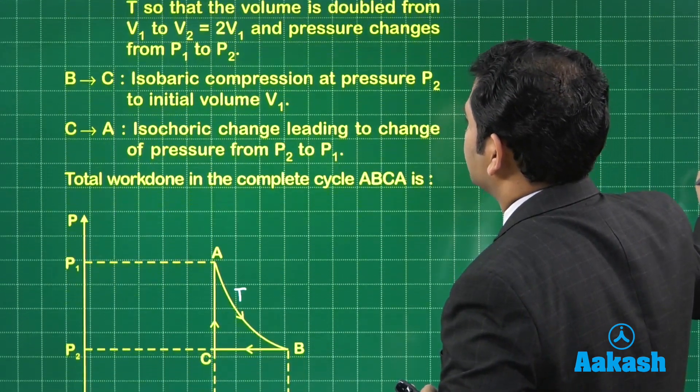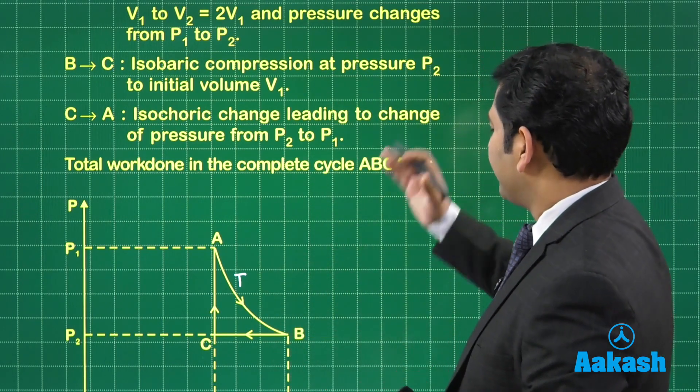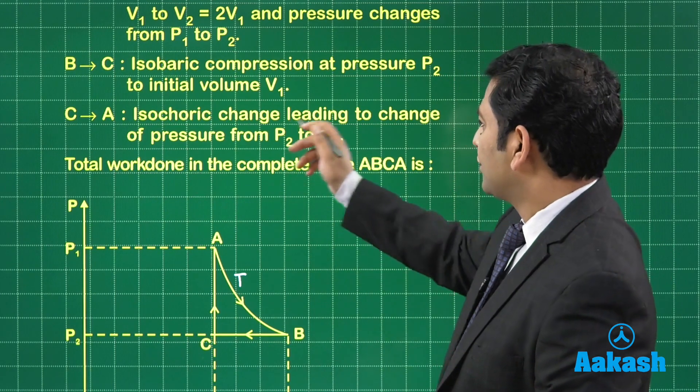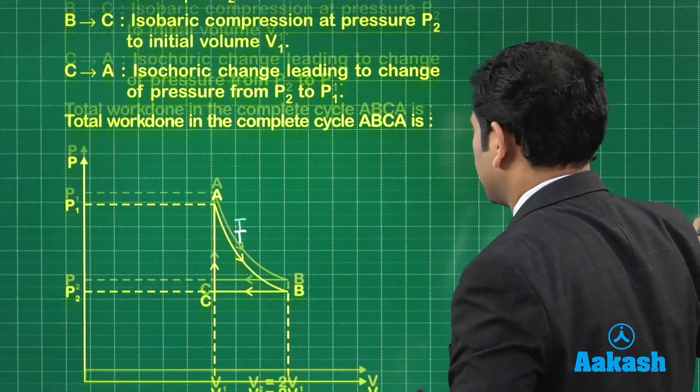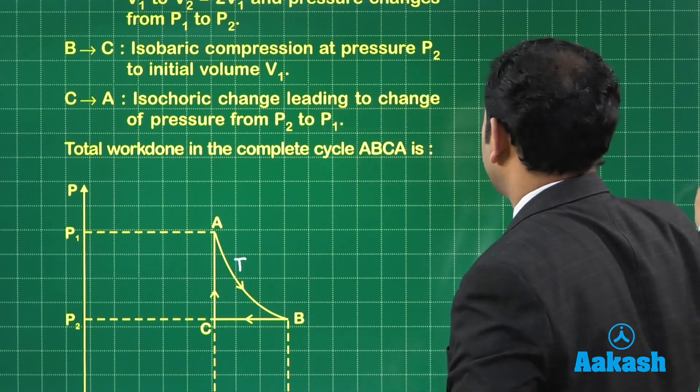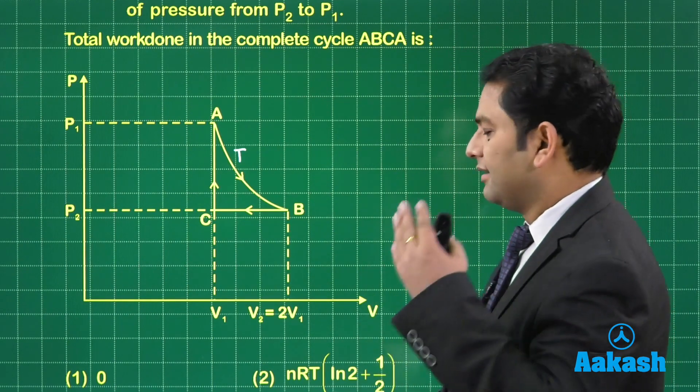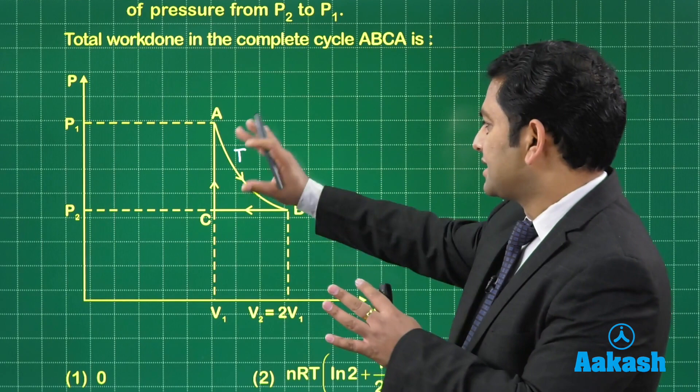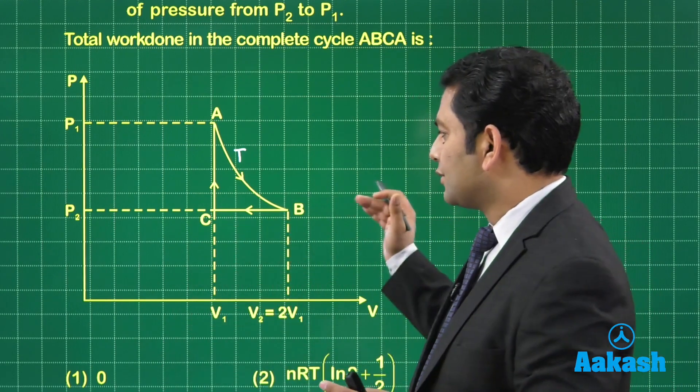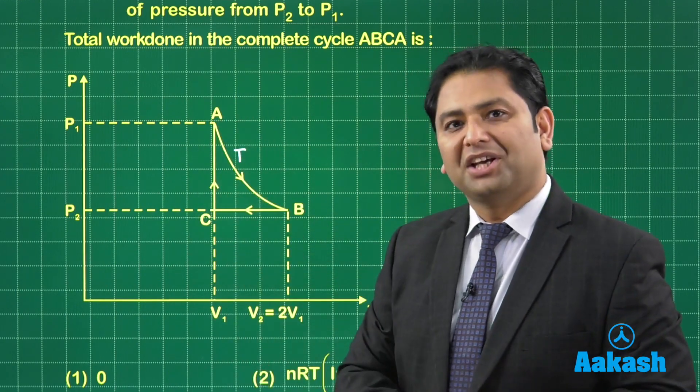What about BC? Isobaric compression. We can see the figure and question simultaneously. Once it reaches there, the pressure is constant, the volume decreases, compression at P2 to initial volume V1. Eventually, isochoric change leading to change of pressure from P2 to P1. This completes the cycle by isochoric process. The entire cycle comprises three steps: isothermal expansion, isobaric compression, and isochorically the pressure has been increased.